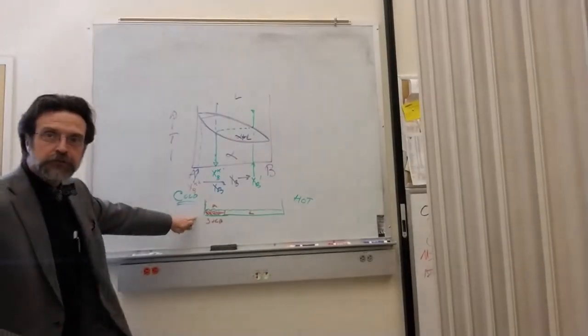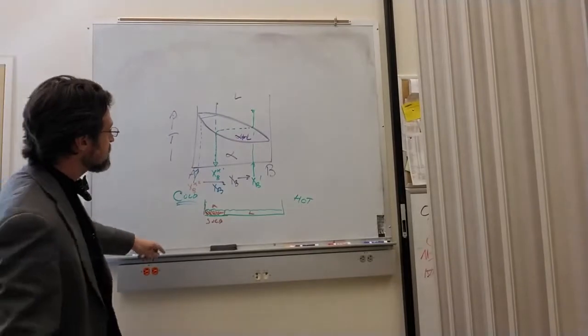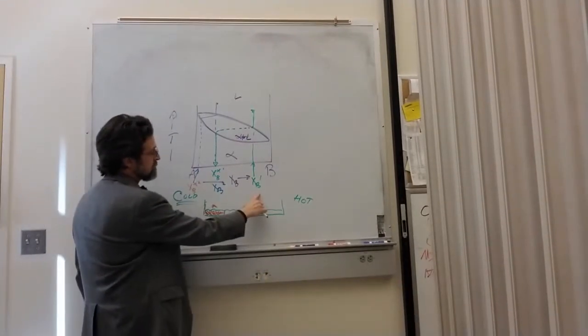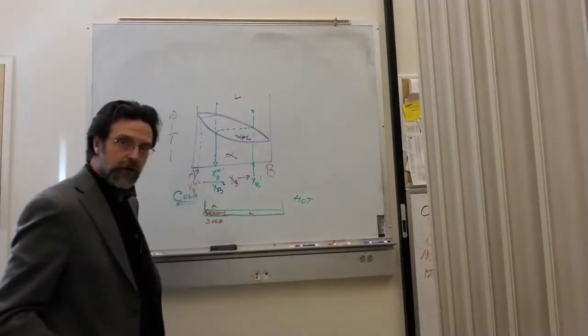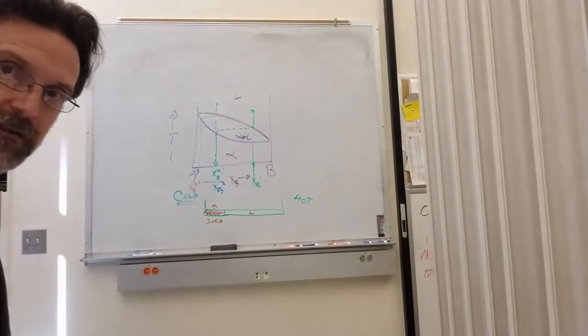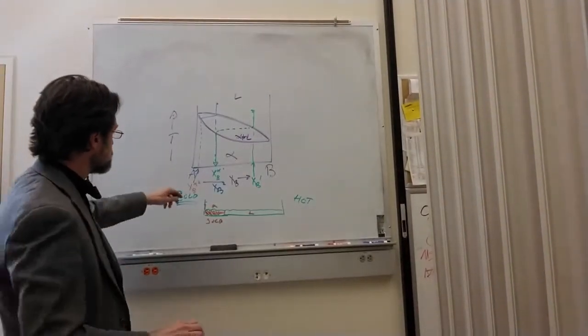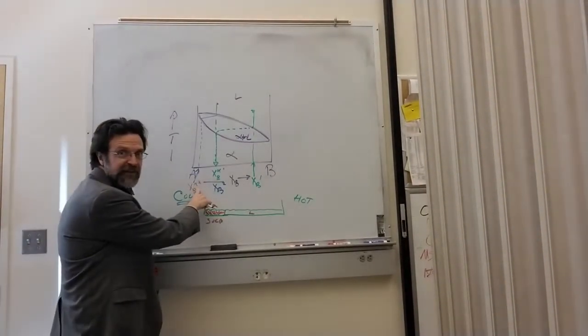So just two passes alone, we've basically gone from something which is about 70% B to something which is closer to 5% B.